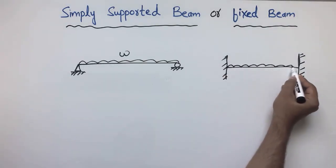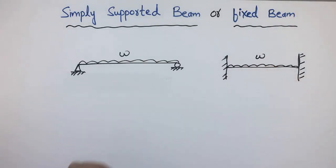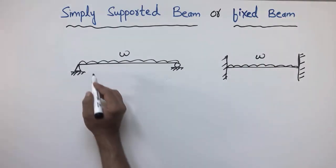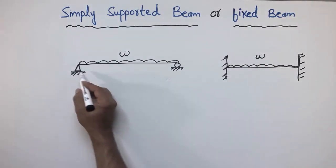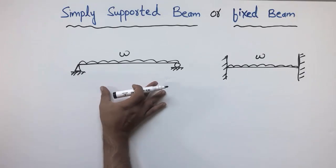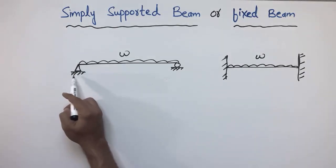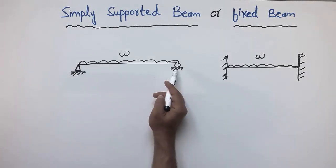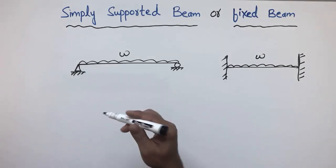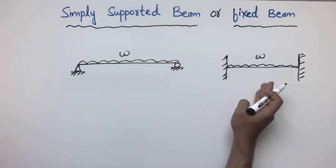Here also the uniformly distributed load is acting on this beam, represented by wo. Now due to the condition of the simply supported beam — in which we have a hinge support and a roller support — we have different deflection and moment in comparison to the fixed beam.